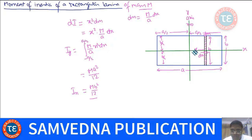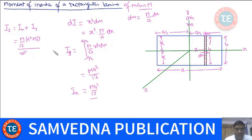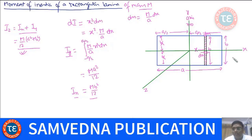If someone wants the moment of inertia about the z-axis, we use the perpendicular axis theorem: Iz = Ix + Iy = (M/12)(a² + b²). Once you get Ix and Iy, you can find Iz using the perpendicular axis theorem. That covers the rectangular lamina.